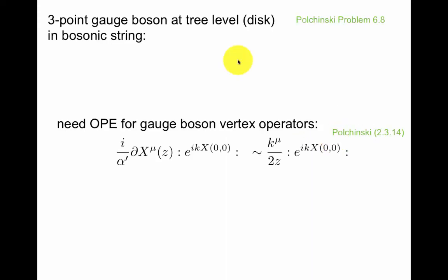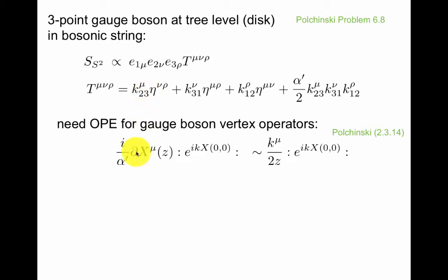How should we interpret this? Let's look at something maybe physically a little more interesting, the three-point gauge bosons at tree level in the bosonic string. This is problem 6.8 in Polchinski. It's very useful to do this problem at this point. To do that, you need the OPE for the gauge boson vertex operators, because you also have the dx's, not just the tachyons. But these give you momenta. When we contract the dx with this, we get k like this. And if we did all the dx's with exponentials, we get this term. These three now look pretty familiar. This looks like a Yang-Mills vertex.